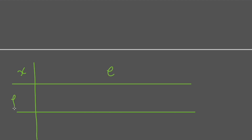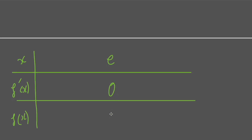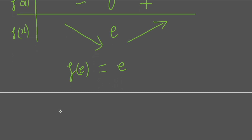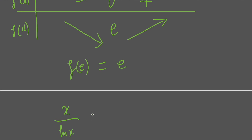We create a variation table to see the increasing and decreasing properties of f(x). At x equals e, the derivative equals 0. To the left of e the derivative is negative, and to the right it is positive. So the minimum of f(x) is f(e), which equals e. Therefore x over ln(x) is greater than or equal to e, and since e is greater than square root of 2, the left-hand side is always greater than square root of 2.